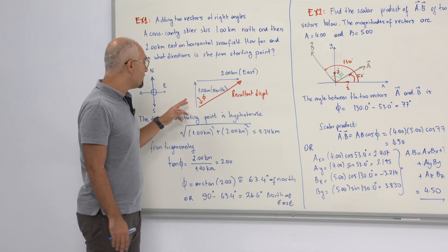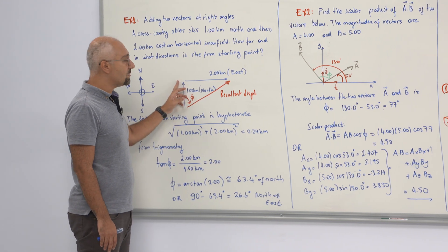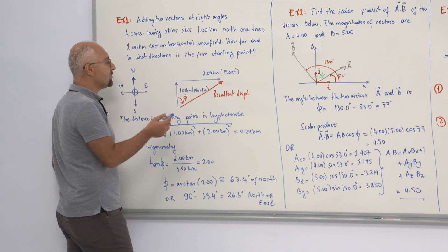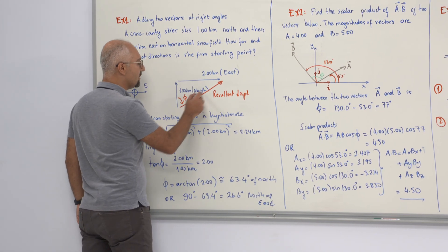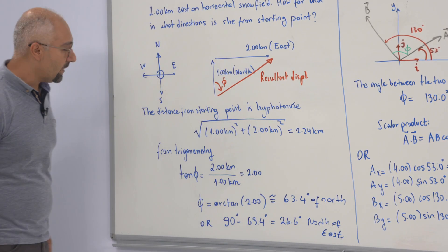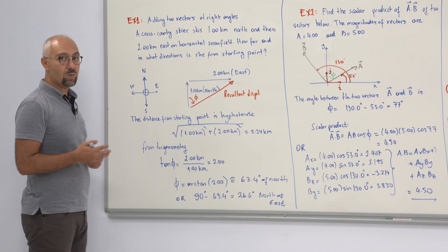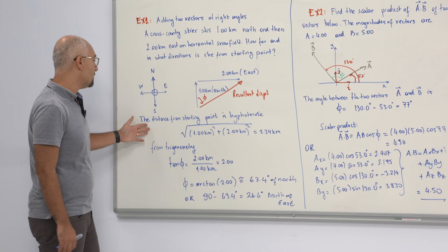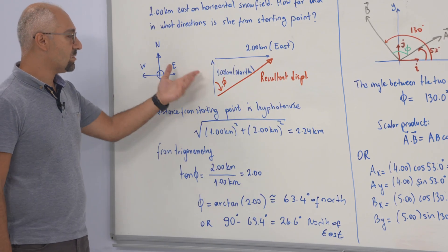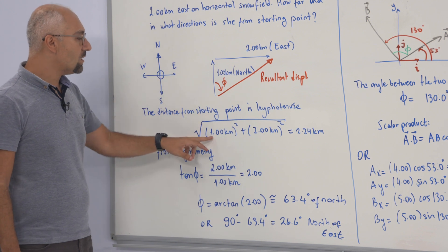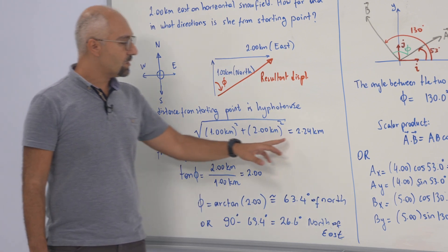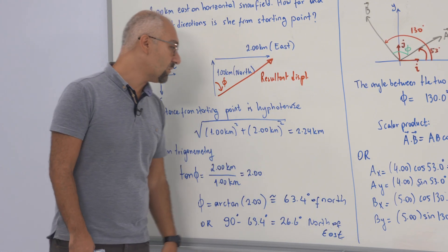From one kilometer to the north and two kilometers to the east, using the fundamental definition of vectors, we get a resultant displacement shown by the red arrow with angle phi. To find the distance from the starting point, we use the hypotenuse: the square root of one kilometer squared plus two kilometers squared, which gives 2.24 kilometers.